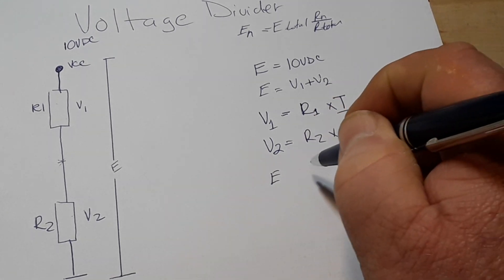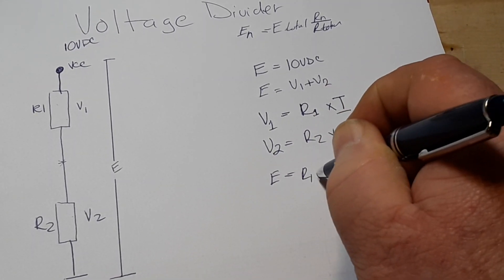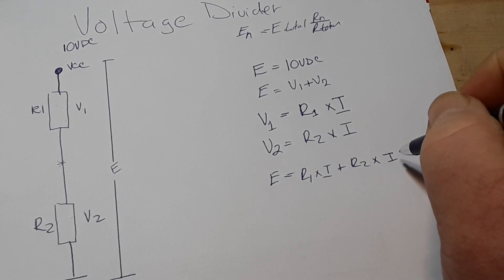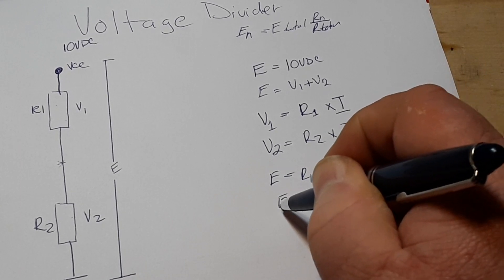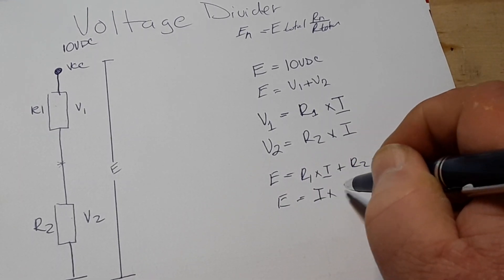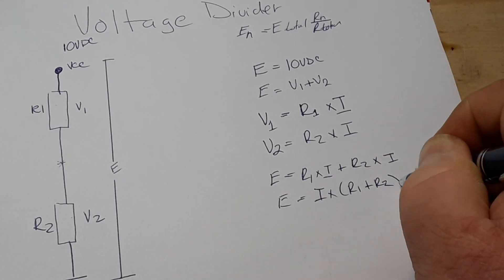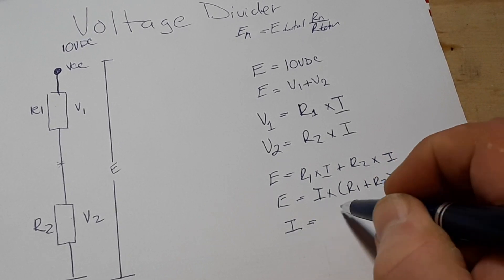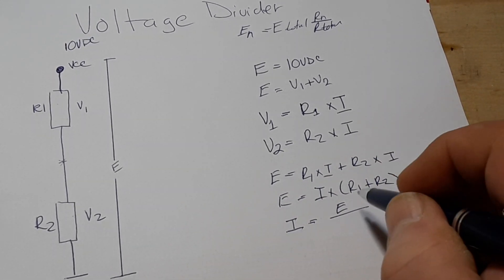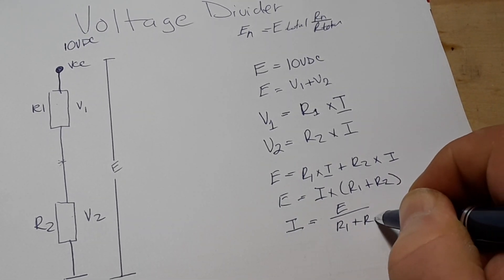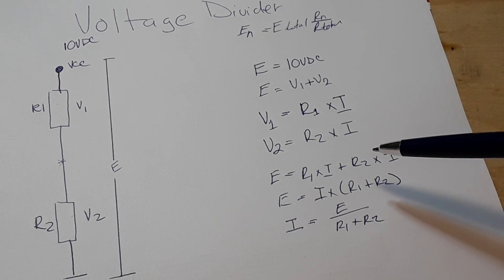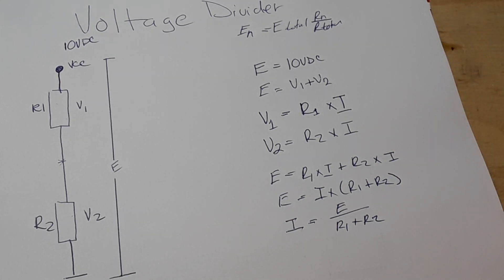Therefore, E is also equal to R1 times I plus R2 times I. And if we simplify that down, we can say that E is equal to I times R1 plus R2. And now we can spin it around. And we can say that the current is equal to the voltage divided by R1 plus R2. So, now that we know all of these formulas, if we have one more piece of information, then we can solve this voltage divider.